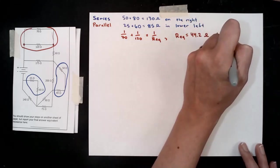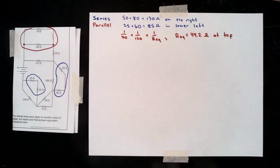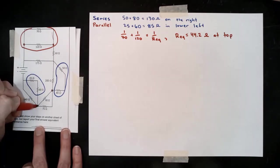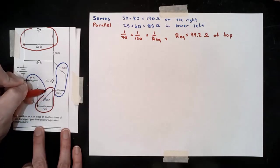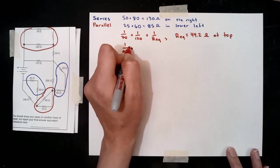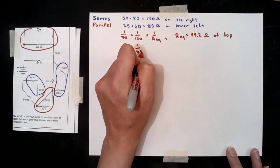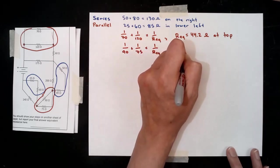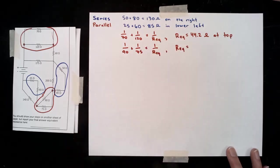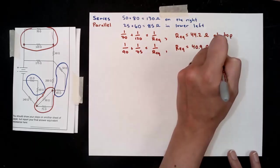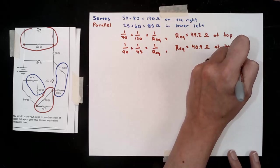We get 44.2 ohms for that top parallel pair. Then in the lower right we have two that are also in parallel with each other. So lots that we can do on this very first step. It is okay if you did these in a couple of different steps, but I do want us to recognize that we don't need to make these seem longer or more drawn out than necessary. Look for all the things you can identify and simplify in that first process of identification and simplification.